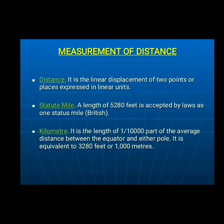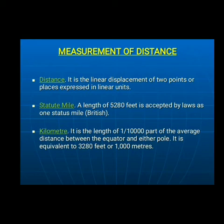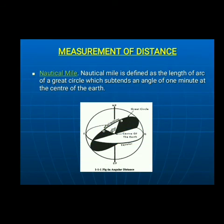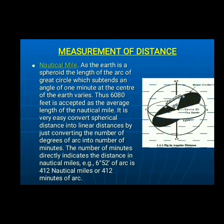Distance: linear displacement between two points. Statute mile: 5,280 feet, which is equal to one mile. Kilometer: one thousand meters, considered 1/10,000 of the average distance between the equator and a pole. Nautical mile: an arc on a great circle which forms an angle of one minute; one nautical mile is equal to 6,080 feet.